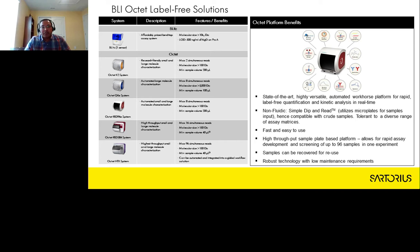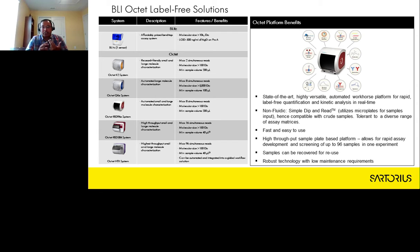Our ForteBio range of BLI label-free instruments spans multiple platforms based on throughput, sensitivity, and budget. The benchtop single-channel BLitz system is our lowest-throughput system for large molecule analysis. Our automated Octet platforms — the K2, RED96E, RED384, and HTX — are the most sensitive BLI platforms that can even characterize small molecule interactions. The HTX has 96 channels, enabling collection of up to 96 simultaneous kinetic traces. The QKE system is ideal for large molecule kinetic characterization and quantitation.